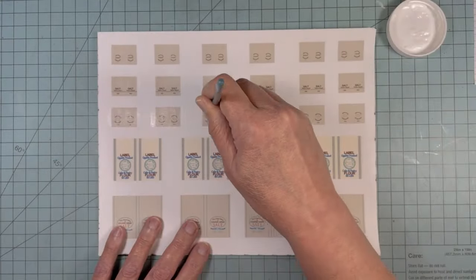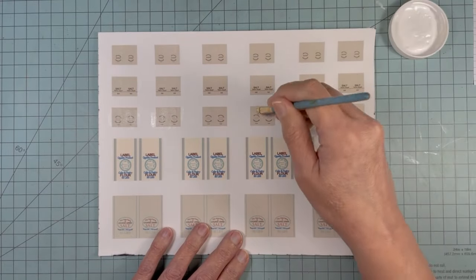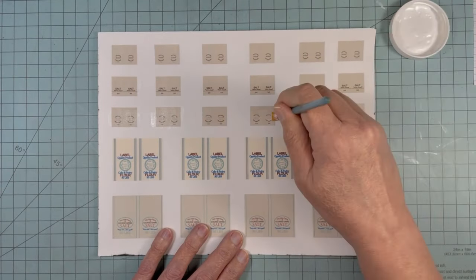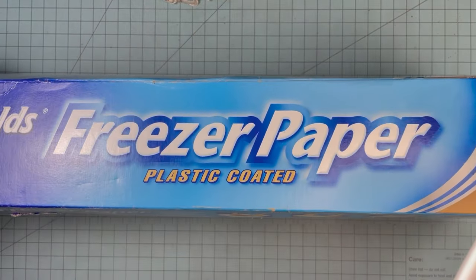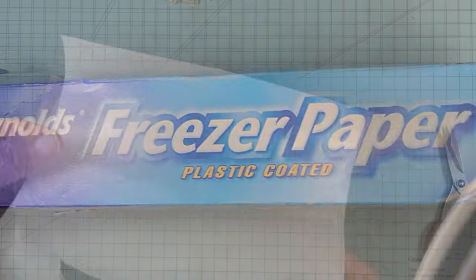I designed some feed sacks and printed on paper-backed fabric that I purchased. Painted a thin coat of Mod Podge. Here is an alternative if you can't find that paper-backed fabric.